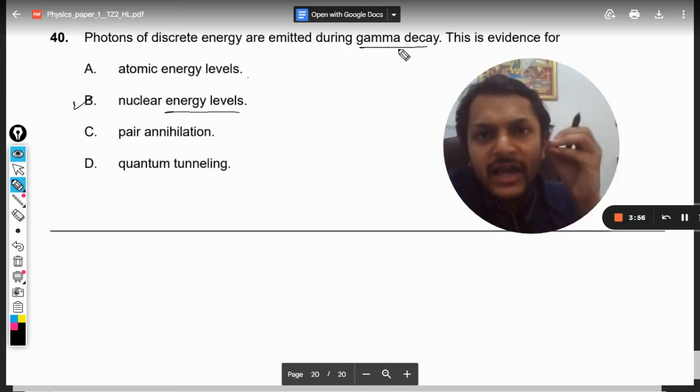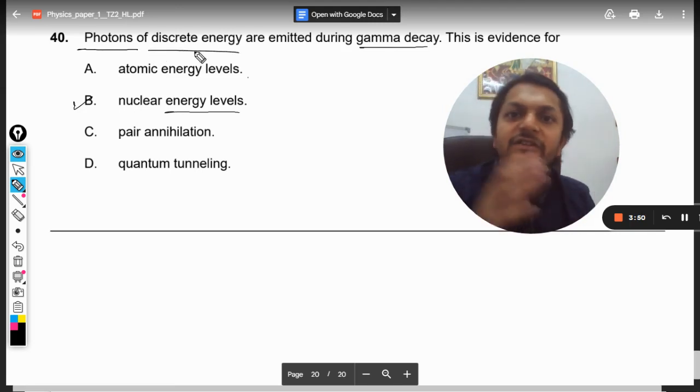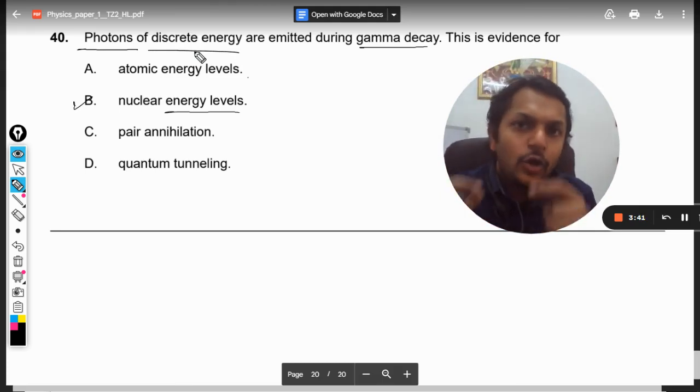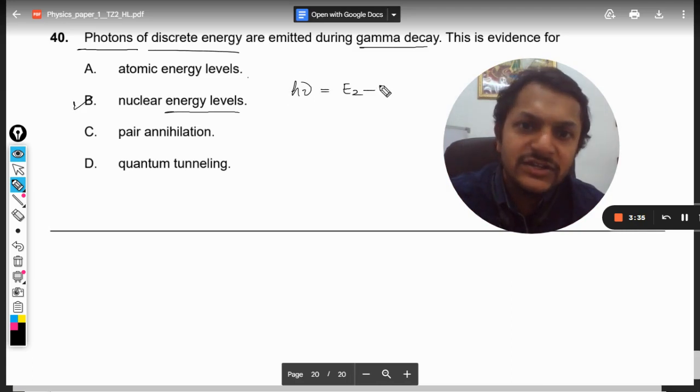Whenever gamma decay happens, the gamma energy comes out of the nucleus. It is always made up of photons, and we know that photons are packets of discrete energy. According to Bohr, he had given a formula that the energy...